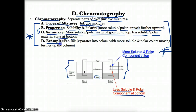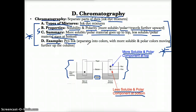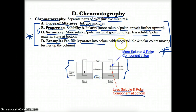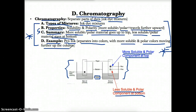An example of a mixture that can be separated by chromatography is a pen ink mixture. If you have a slip of paper and put pen ink on it and use chromatography, letting water bleed up through the paper, you'll see that the pen ink mixture separates into colors — the more soluble and polar colors moving further up the column, and the less polar and less soluble colors staying at the bottom.